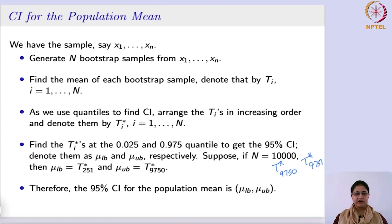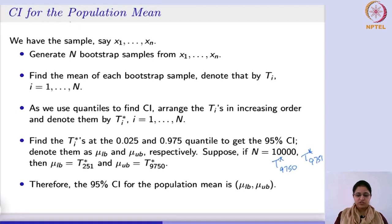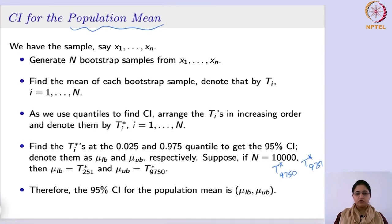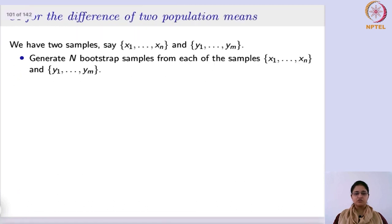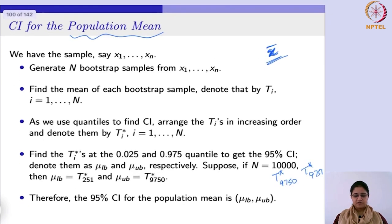So this is how you do it for the population mean — it is very simple. You just have the data, resample, and calculate the same statistic. Since we are interested in the population mean, we focus on the sample mean. We arrange those sample means in order and find the lower and upper bound for the confidence interval. Likewise, if you change to variance, you calculate the sample variance, arrange the sample variances in ascending order, then find the lower and upper bound to get your confidence interval.